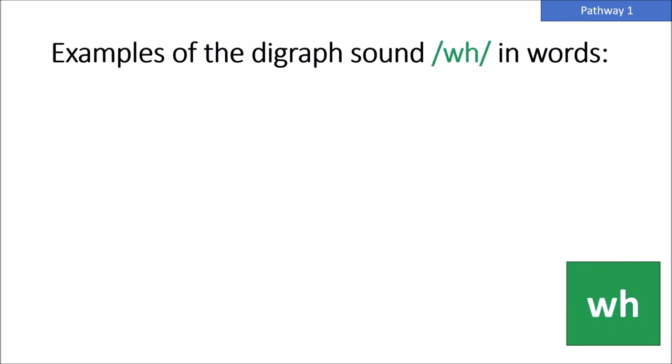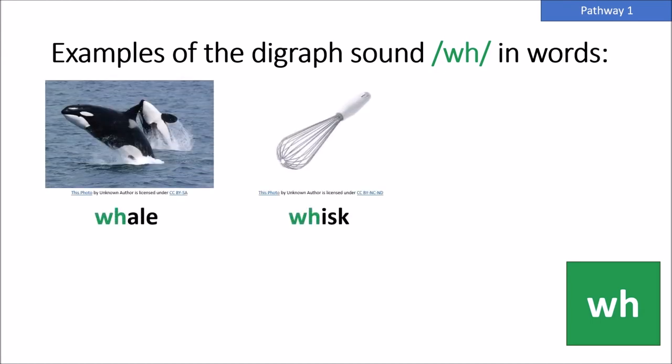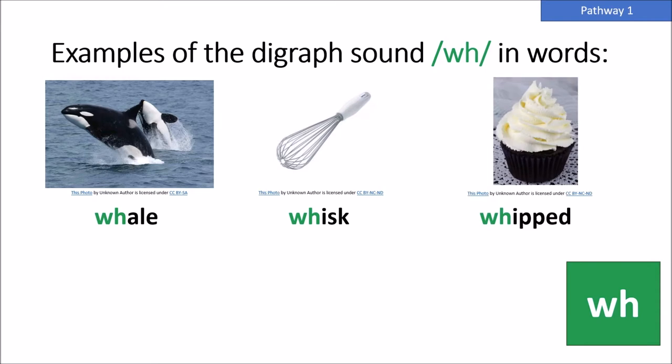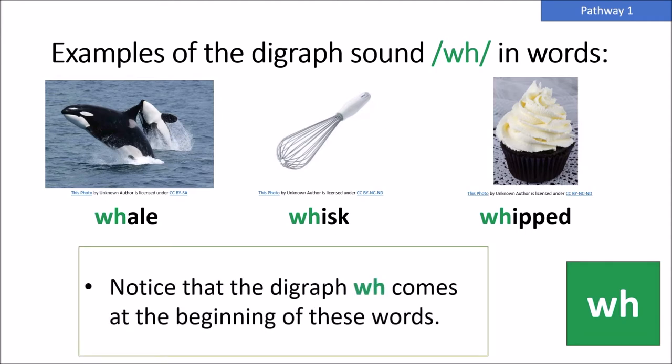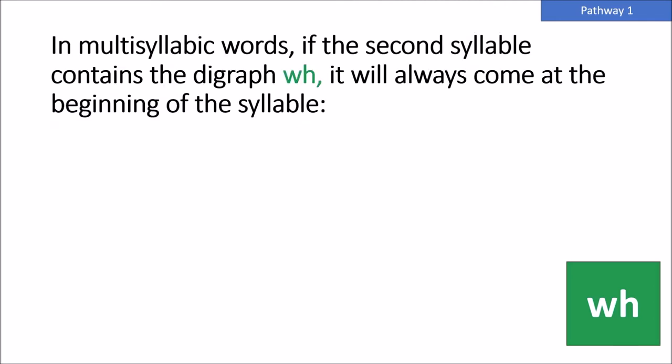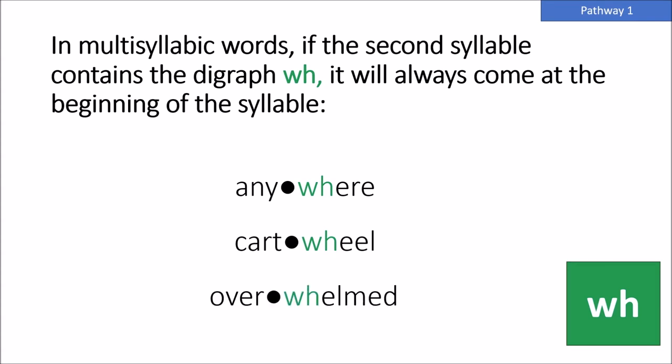Examples of the digraph sound 'wh' in words: whale, whisk, whipped — like whipped icing or whipped cream. Notice that the digraph WH comes at the beginning of these words. In multisyllabic words, if the second syllable contains the digraph WH, it will always come at the beginning of the syllable — for example, anywhere, cartwheel, overwhelmed. Notice that the WH is always at the beginning of the second syllable in these words.